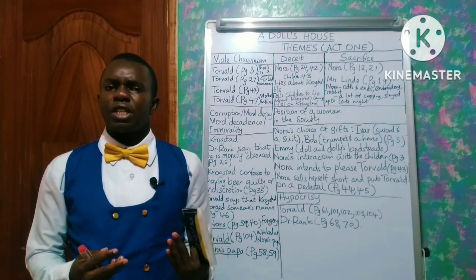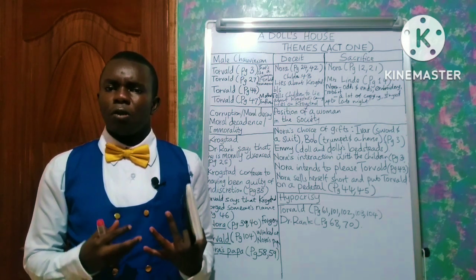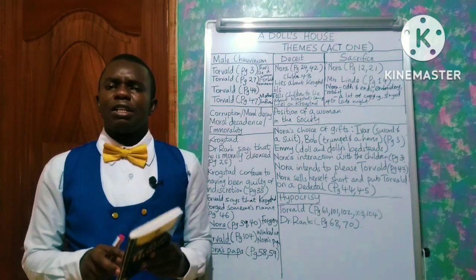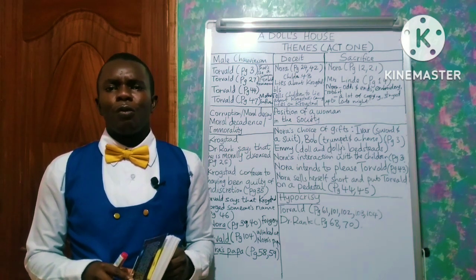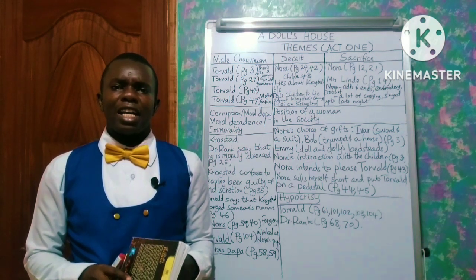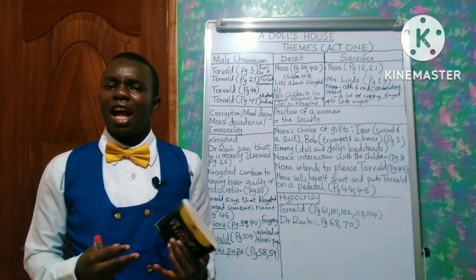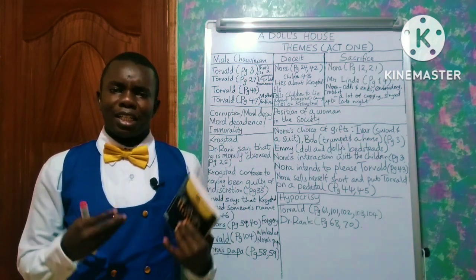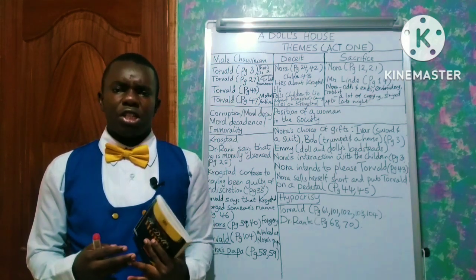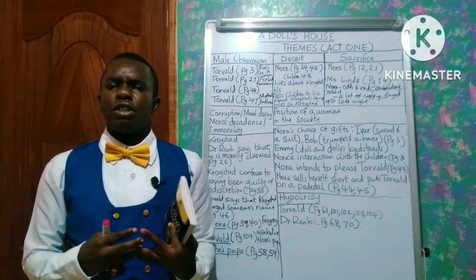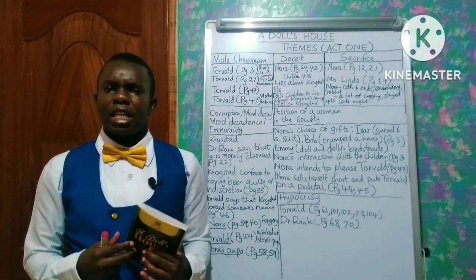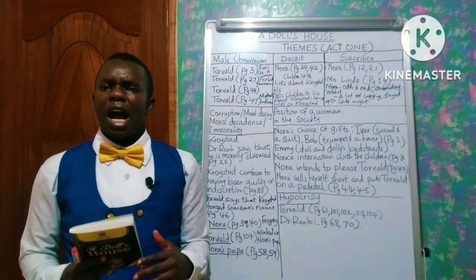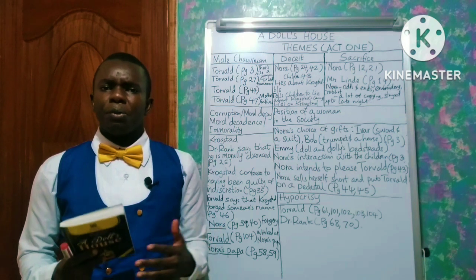I still believe that three weeks is still a long time to change quite a lot of things in one's performance. This text, that is A Doll's House, has only 120 pages. In the event that a candidate decides to read 40 pages a day, that would mean that in three days the candidate will be done with the whole text. This is my strategy that I give to candidates in handling this text in the remaining days. I urge candidates to draw a table, maybe at the back of your books or anywhere.